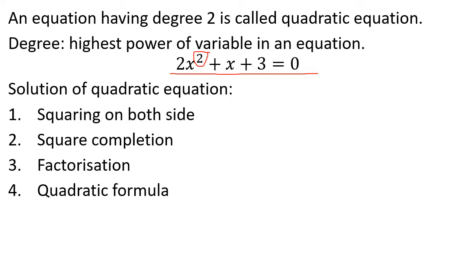We want to express the quadratic equations. 2.5 square is equal to 2. We will use x to answer the question. Here is square completion, factorization — product is equal to sum. We will discuss the 4 methods, including the quadratic formula.